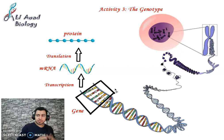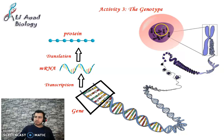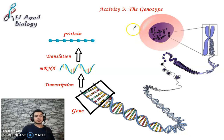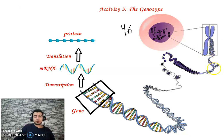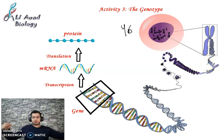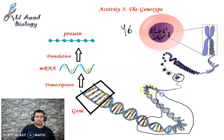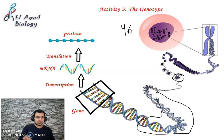Before we define a genotype, remember that inside the cells of the body there is a nucleus, and inside the nucleus there is chromatin at rest, or a chromosome during cell division. The total number of chromosomes in a diploid cell is 46, and 23 in a haploid cell. Chromosomes are made up of two chemical substances: DNA and histone proteins.